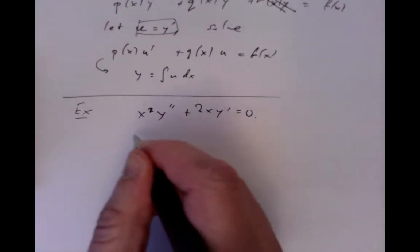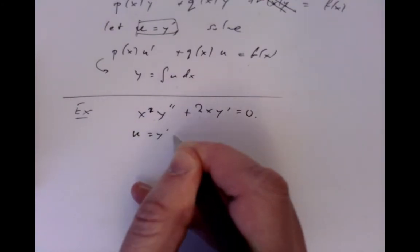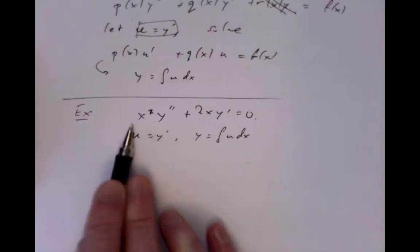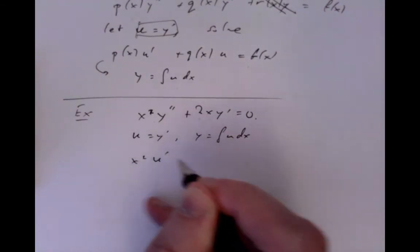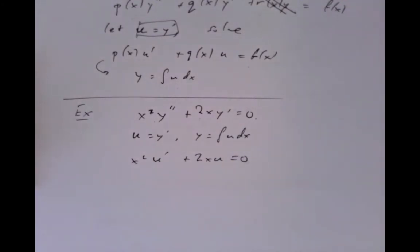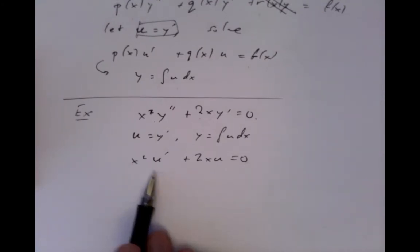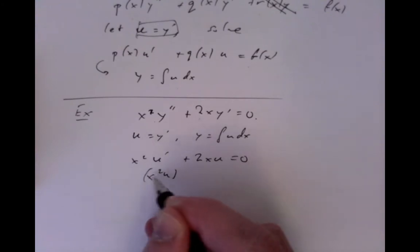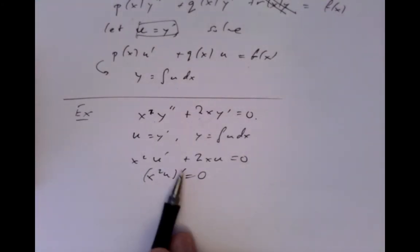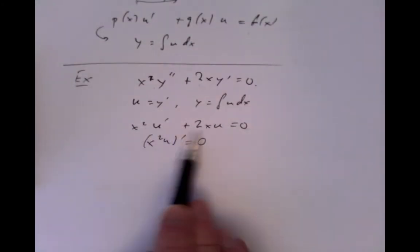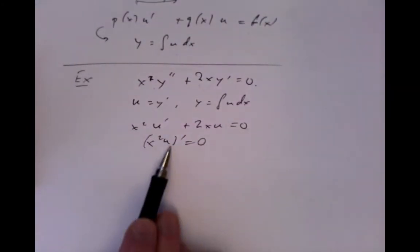But we can use this technique here. We can say we'll let u equal y prime, or in other words y equals the integral of u dx, and then plug that in here to get x squared u prime plus 2x u equals 0. If you notice the appearance of a product rule here, you might see that that's just the derivative of x squared u equals 0.